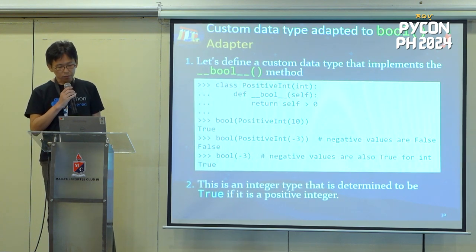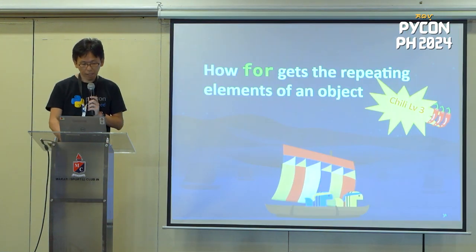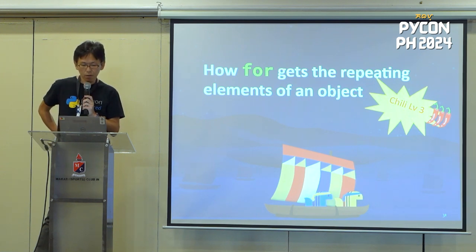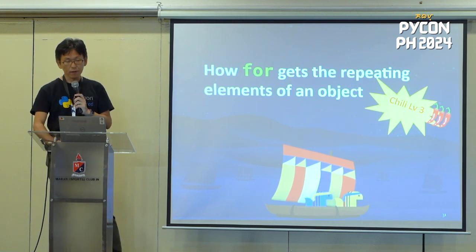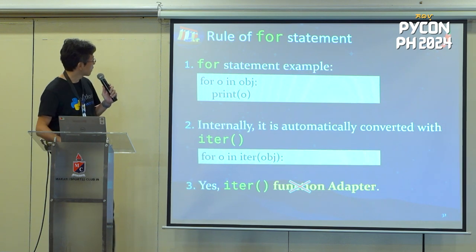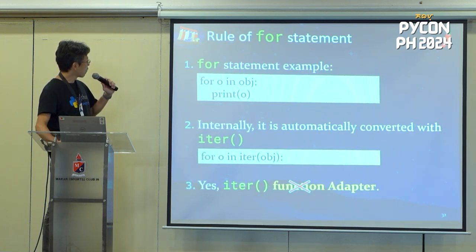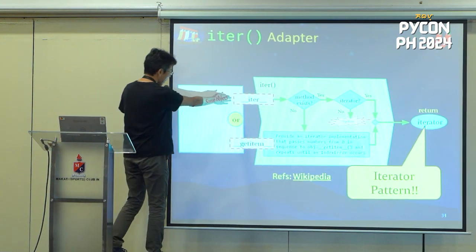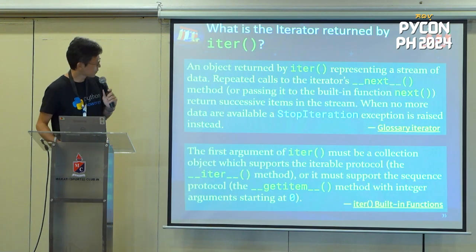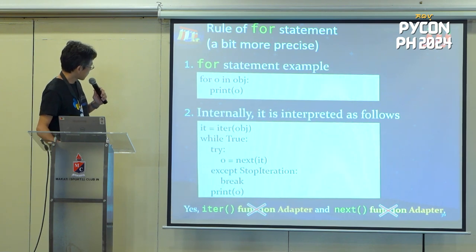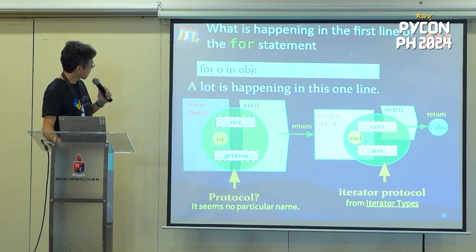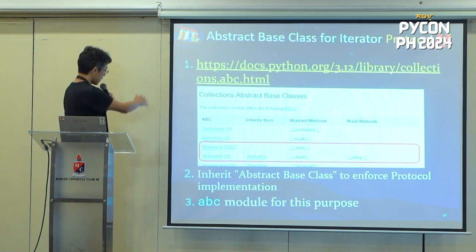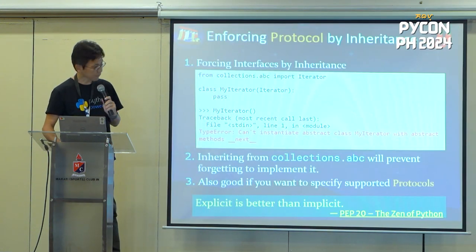That concludes our discussion on true determination in if statements. Part Three would have been about how for loops get the repeating element of an object, but I'll skip it due to limited time — I hope you will refer to it later. I'm skipping these ten slides, but it talks about the for statement using an iterator adapter and passing. The iterator adapter requires a `__iter__` or `__getitem__` method. And the protocol definition is there.